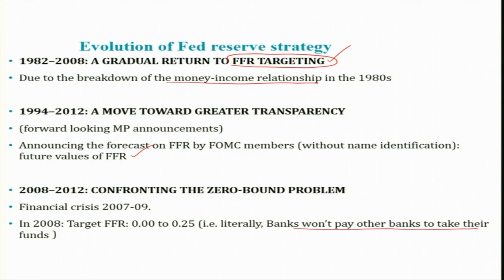The Fed was seeking to provide credit to a number of sectors of the economy that would otherwise slow down due to a shortage of funds from banks. In order to prevent recession and economic depression, the Fed used this unconventional monetary policy strategy during the 2007–09 period.